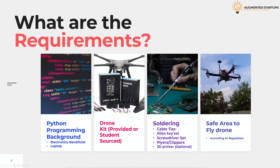Cable ties are your friends - there'll be components where we'll use double-sided tape along with cable ties to ensure nothing goes loose. You'll need an Allen key set, a screwdriver set, some pliers and clippers. And optionally, a 3D printer. If you have one, great - I found it really useful. In one case, I had to mount my battery at the bottom of the drone, but the battery was so big it went beyond the landing gear, meaning the drone would land on the battery. So I printed some spider-looking legs, which you probably saw in the demo. Finally, you need a safe area to fly, according to your country's regulations.